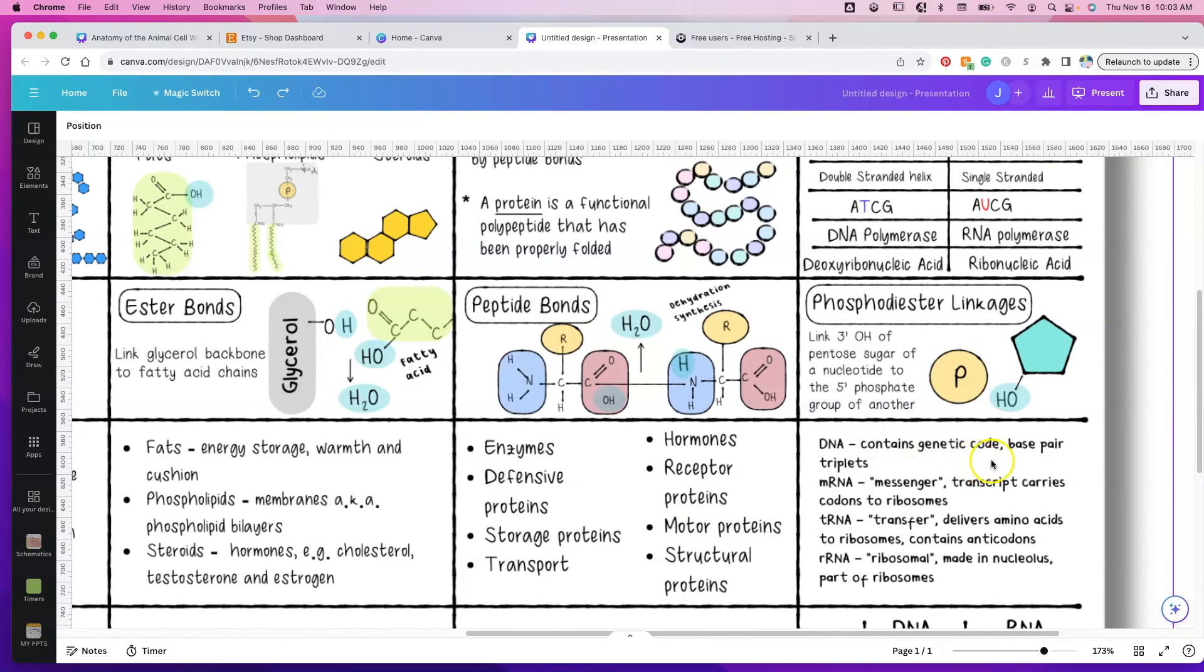Function for our nucleic acids. Of course, DNA has our genetic code, and this is read in base pair triplets. When you read the DNA, we create mRNA, messenger RNA. This transcript carries codons. We have tRNA, which is transfer RNA, and this is the RNA that delivers amino acids to the ribosomes. It has the anticodons which can read and bind to the codons and delivers the proper amino acid. If this is all new to you, I have lectures on this. And we have rRNA, which is ribosomal RNA, which is made in the nucleolus, and this is going to help make ribosomes.